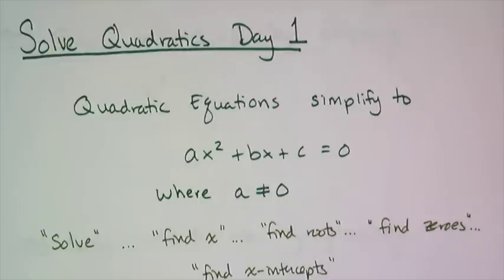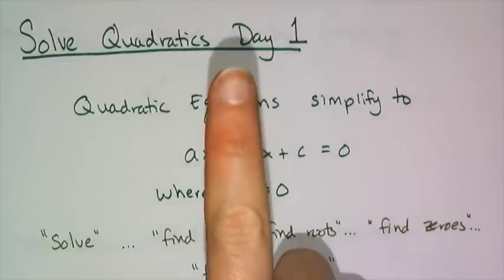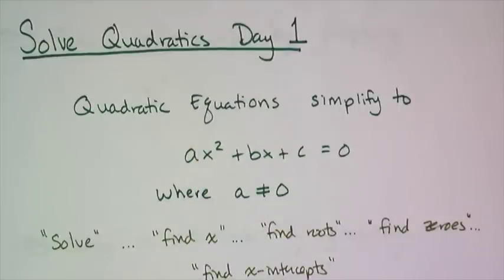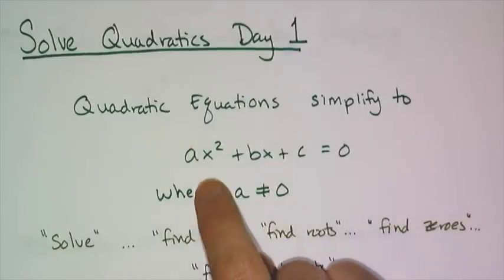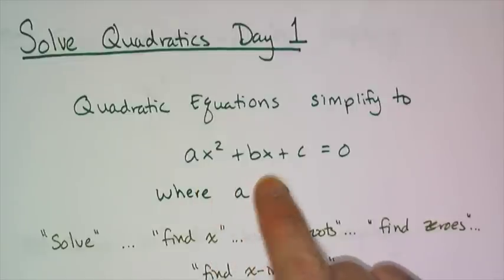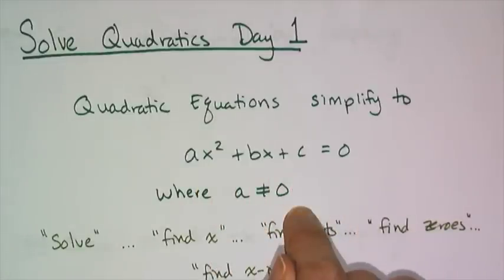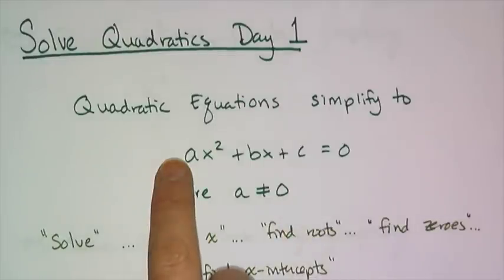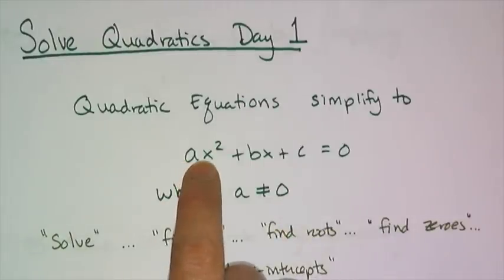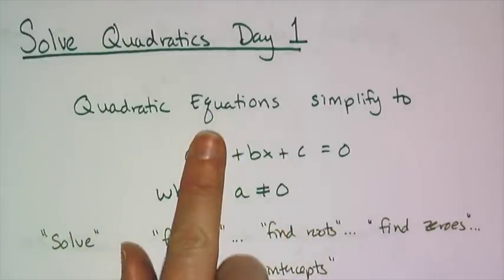So it's time for us to talk about how to solve quadratic equations. Day one. You need to be given some sort of equation that can simplify to ax² + bx + c = 0, where a is not equal to zero, because that a term not being zero is what makes it quadratic. If you get rid of it, then you have something linear.